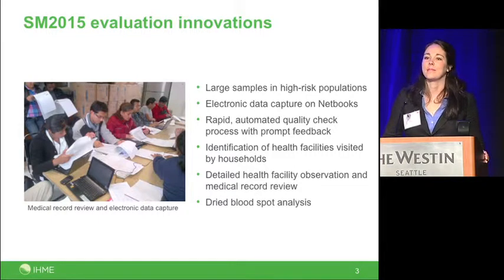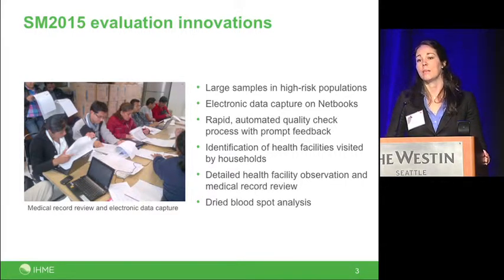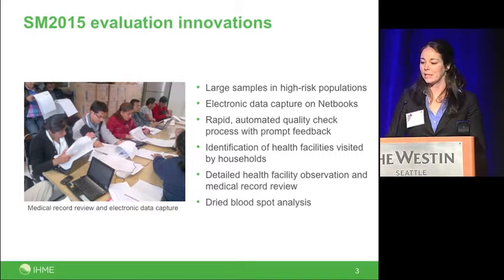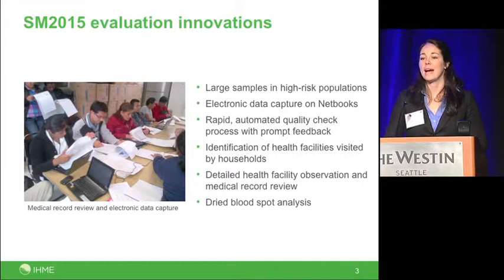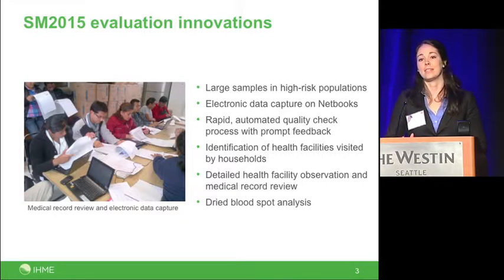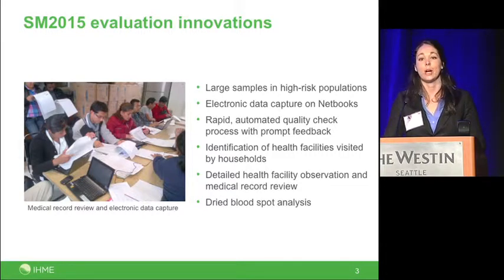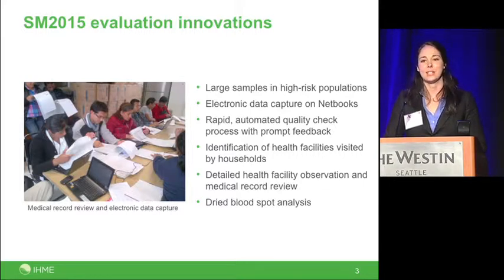Some unique aspects of the SM2015 evaluation include large sample sizes in high-risk areas — in Chiapas, we're collecting data on more than three times more women and children in poor areas than the most recent National Health and Nutrition Survey. We're capturing data electronically on netbooks, which allows us to reduce errors, have immediate access to data, and conduct rapid automated quality checks. In our household survey, we ask all respondents for the name and location of every health facility they attend, allowing us to link households to health facilities. Our dried blood spot samples will allow us to compare survey-based estimates of vaccination coverage to antibody presence.